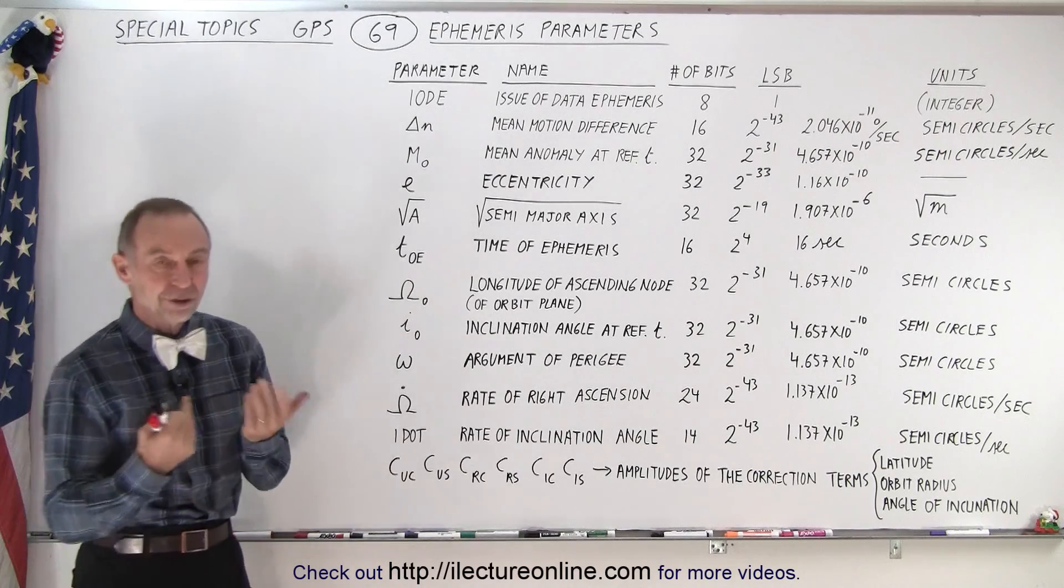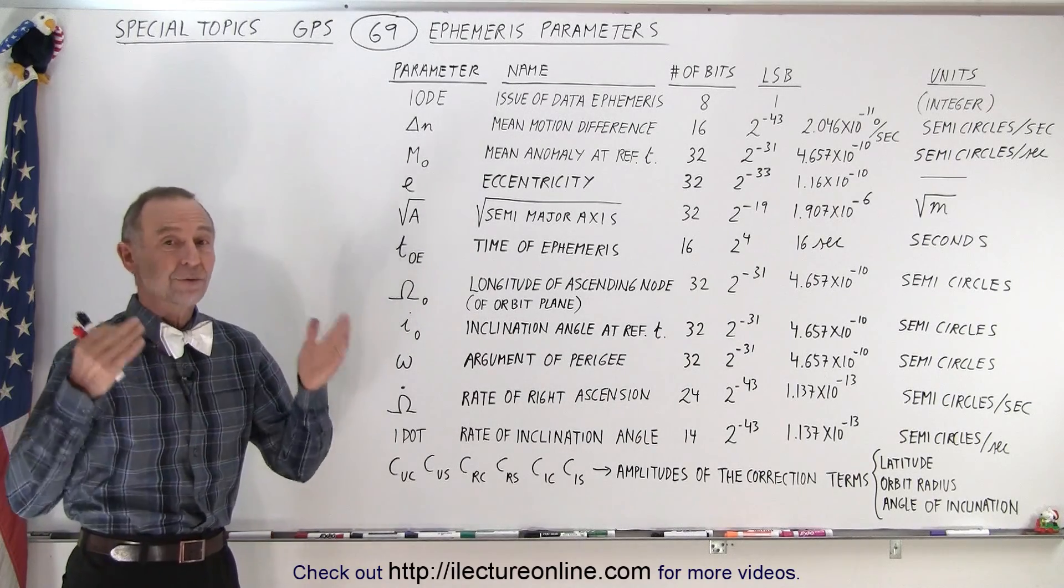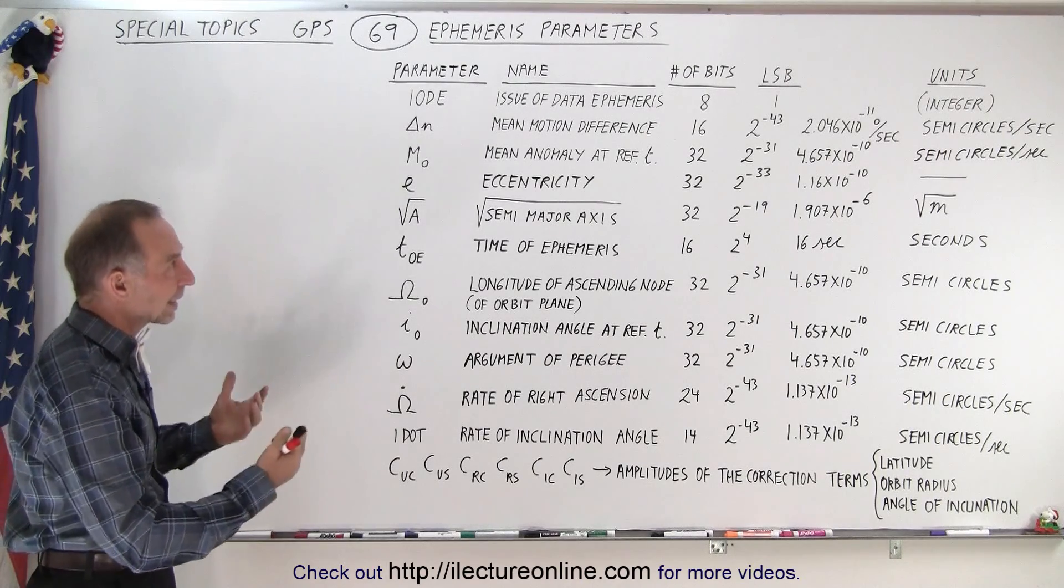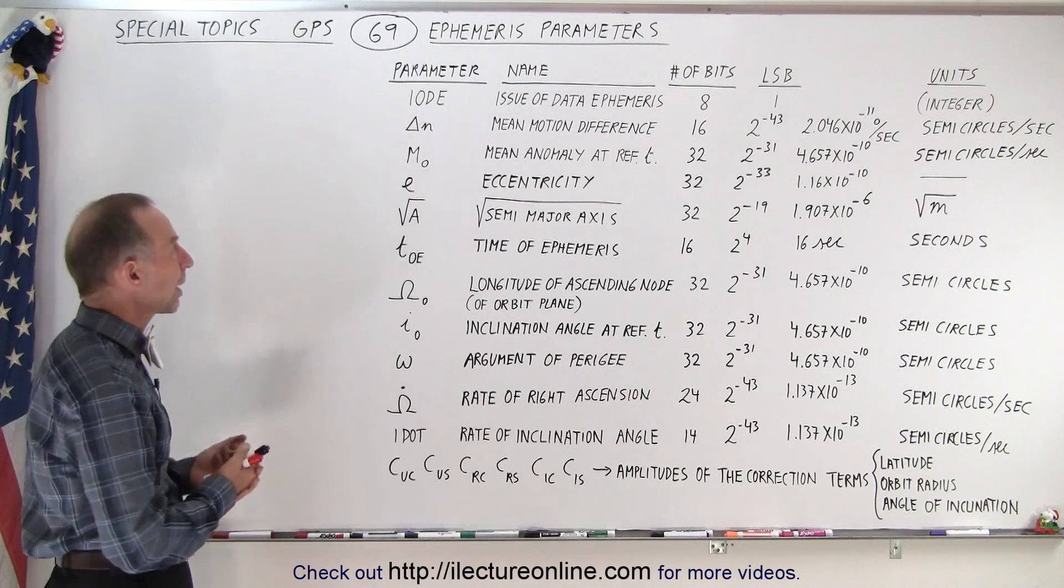Whatever satellite is transmitting that data, so every satellite transmits its own ephemeris data. Here what we want to do is take a look at the sizing of those parameters.